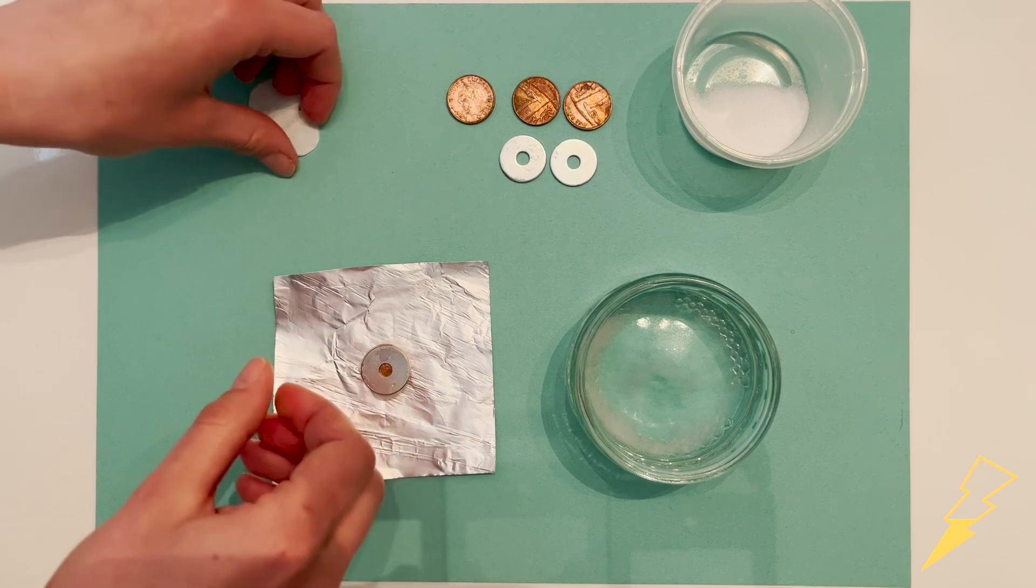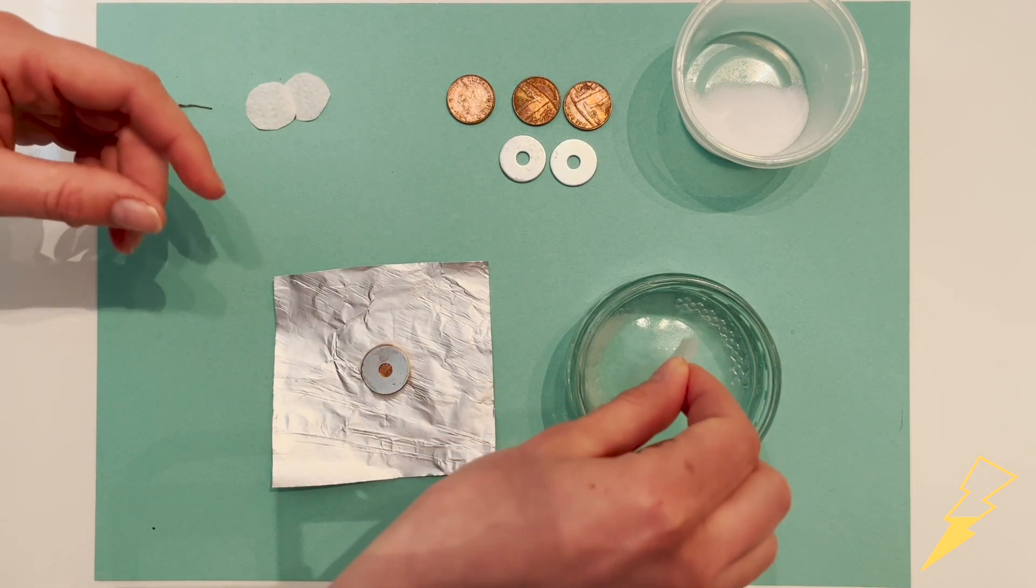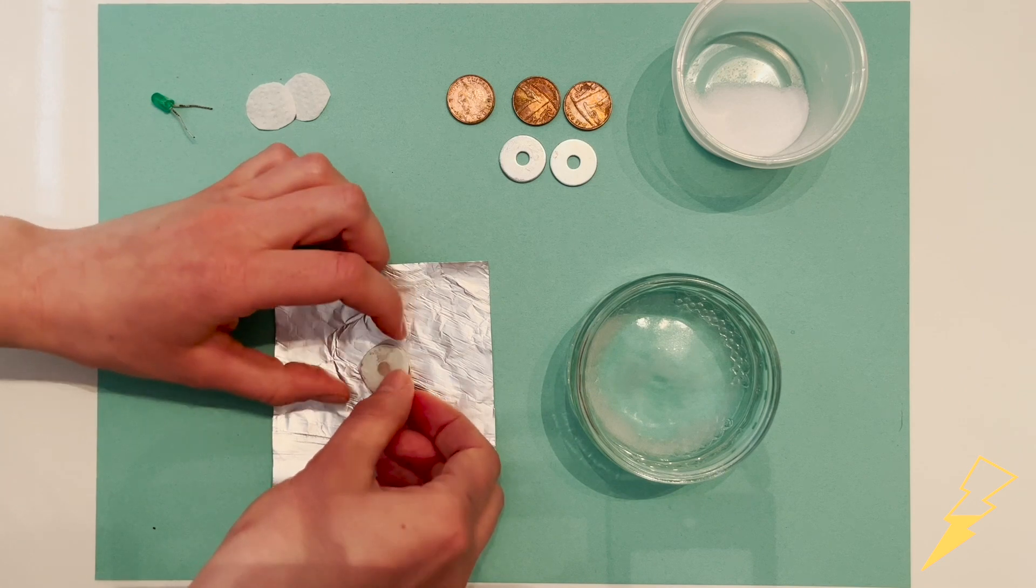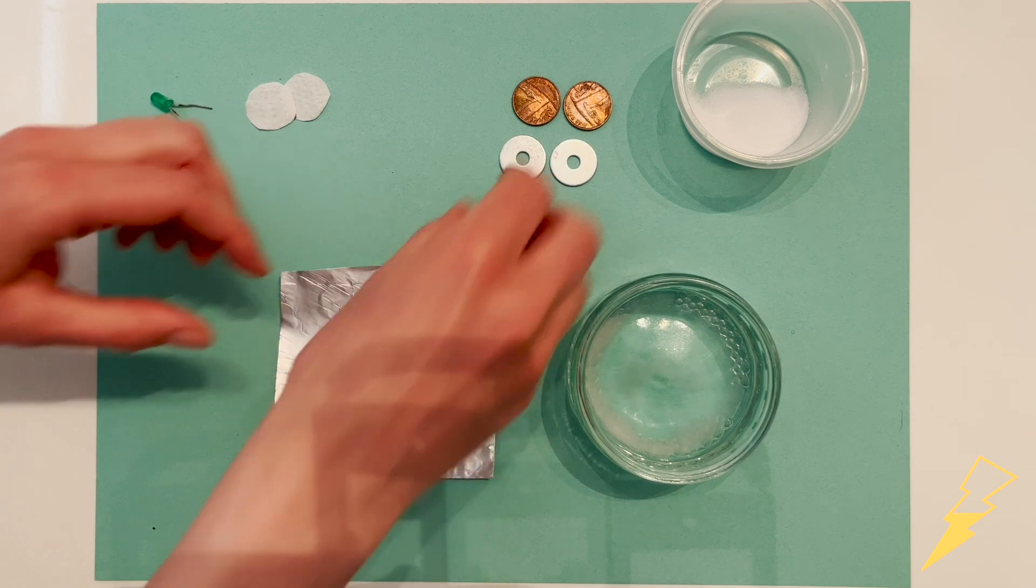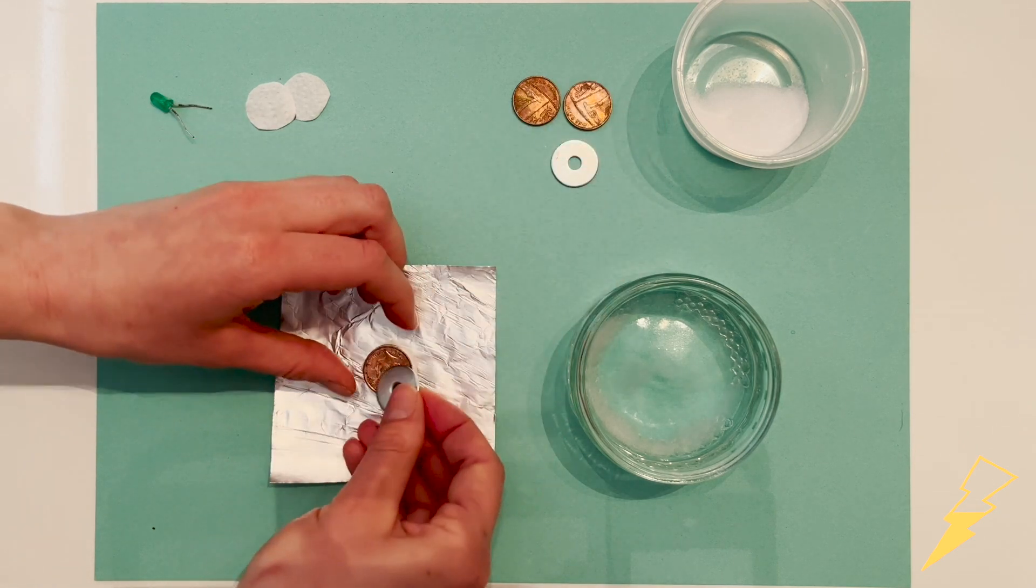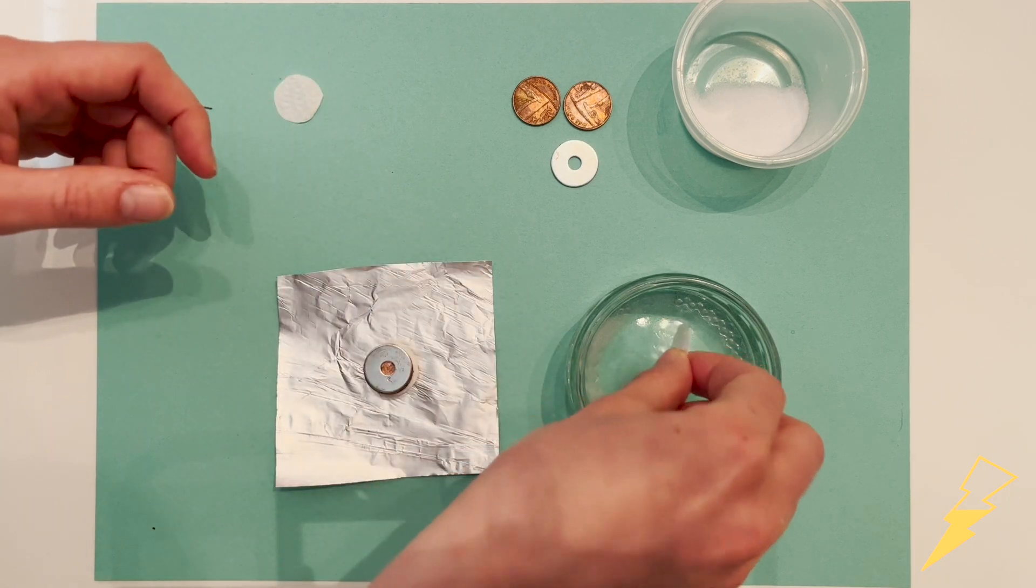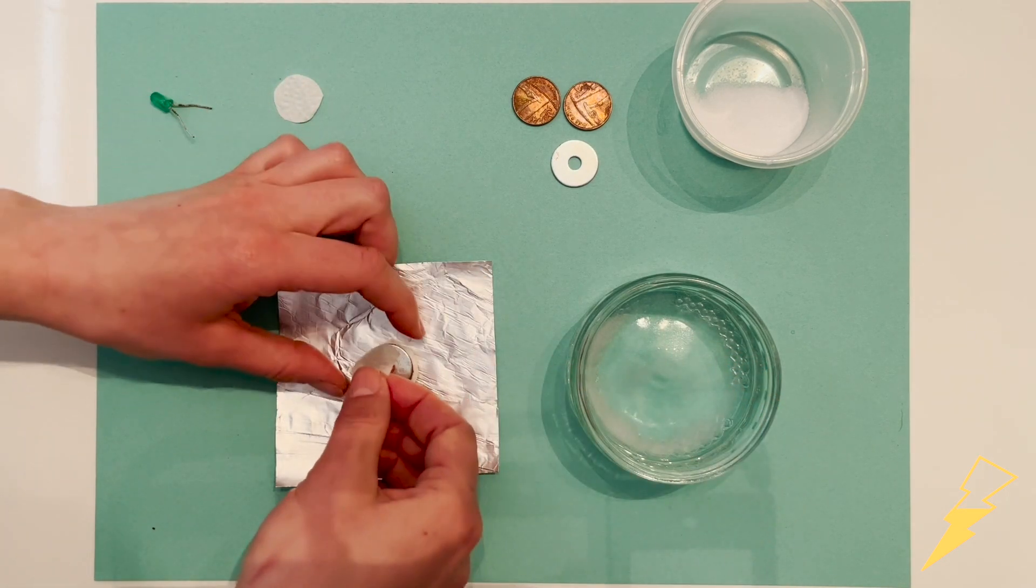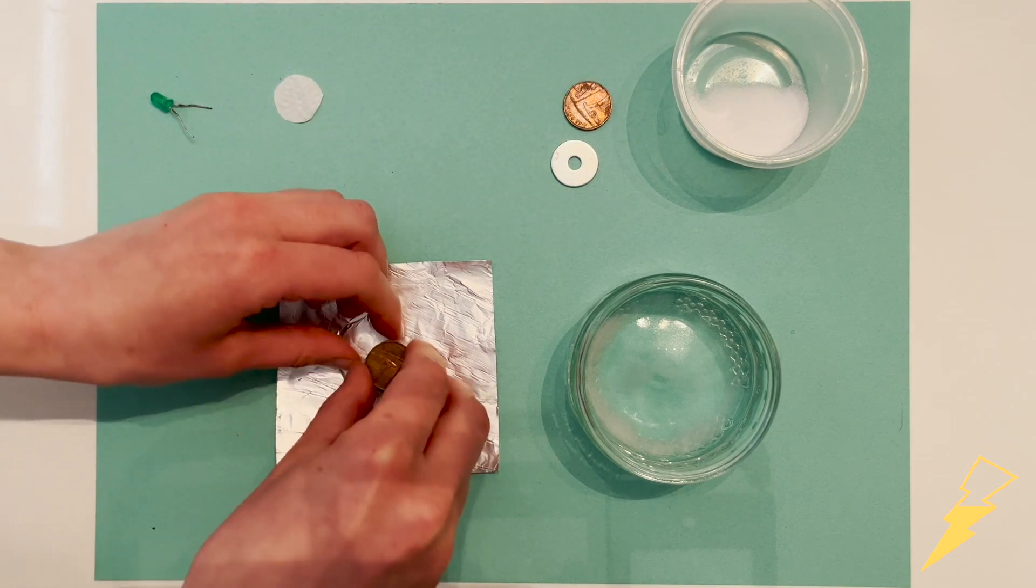And all we do now is keep building the cells until we run out of materials. There should be enough in your pack to be able to build a stack made up of five individual cells, one on top of the other.